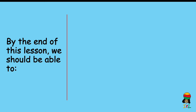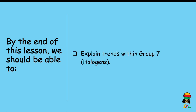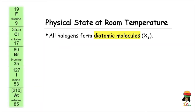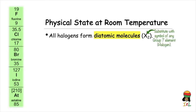By the end of this lesson, we should be able to explain trends within Group 7. The first trend for this discussion is the physical state of the halogens at room temperature. All halogens exist as diatomic molecules in the element form, meaning two atoms bond together to form a molecule with the general formula X2, where X can be substituted with the symbol of any halogen or Group 7 element.